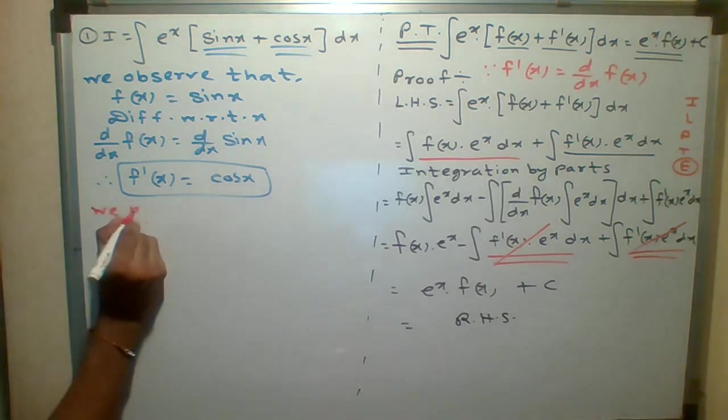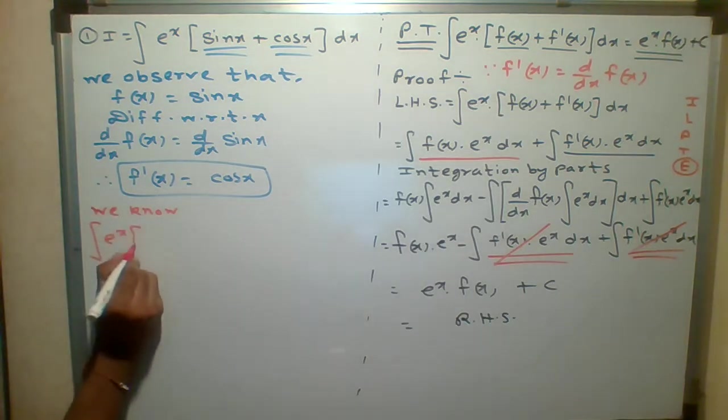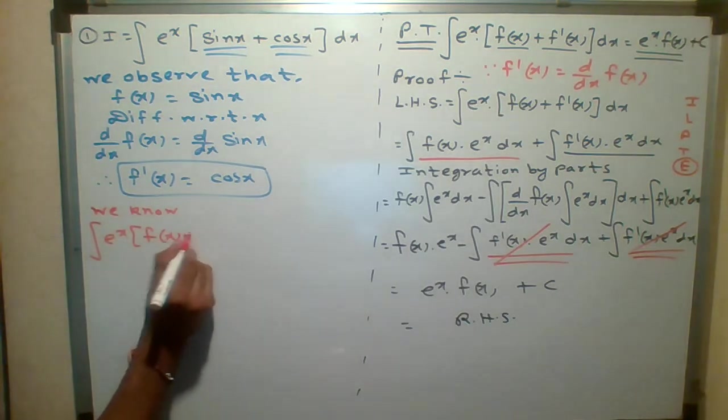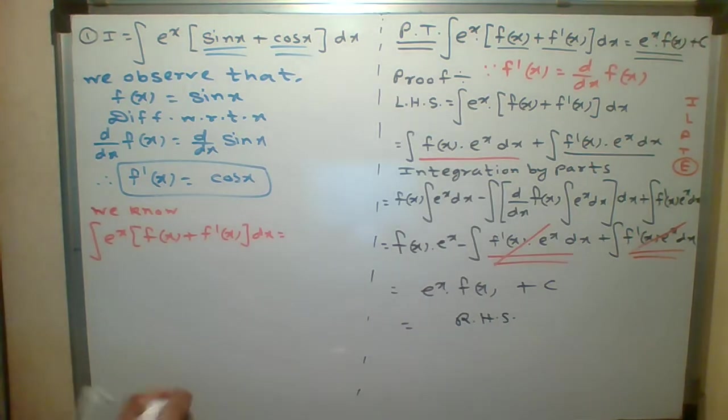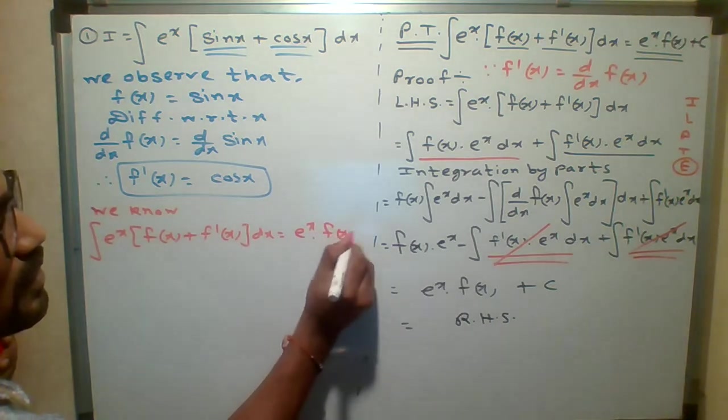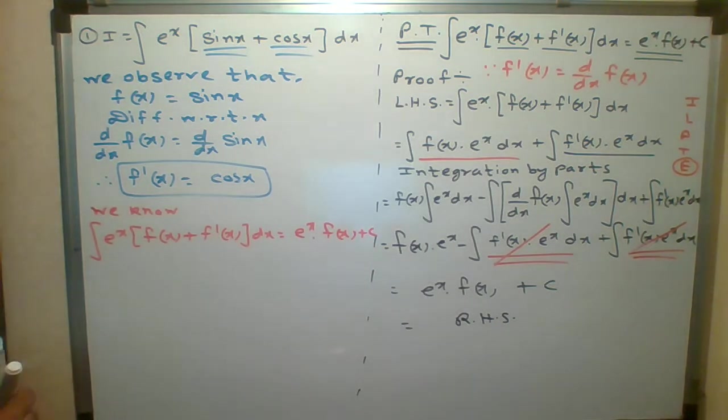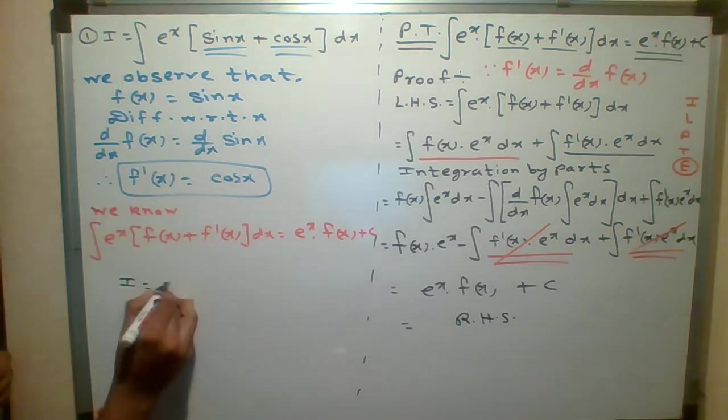We know the formula. Integration of e raised to x. If there is f of x and f dash of x, then you don't need to integrate. Directly you can write the formula. What is the final answer? Therefore answer equals to e raised to x.